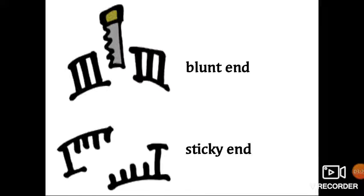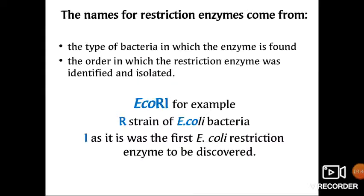In this image you can see the difference between blunt ends and sticky ends. A blunt end means no overhang is present and no free nitrogen bases are exposed. In a sticky end, the cut is made at different nucleotides on both strands so that a few nucleotides remain unpaired as an overhang — that is why they are called sticky ends.